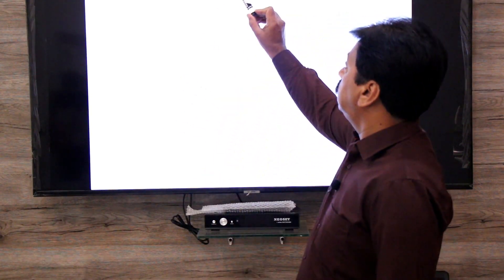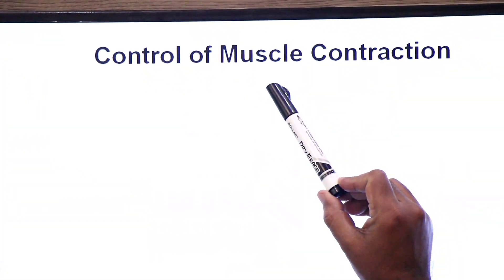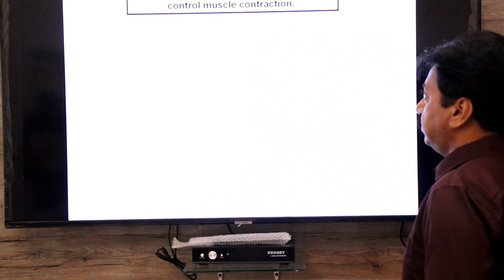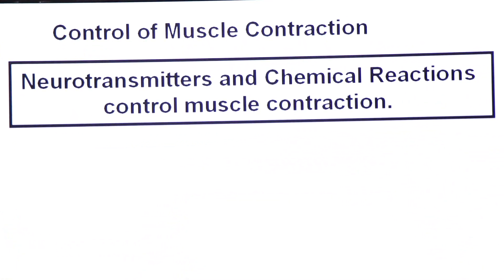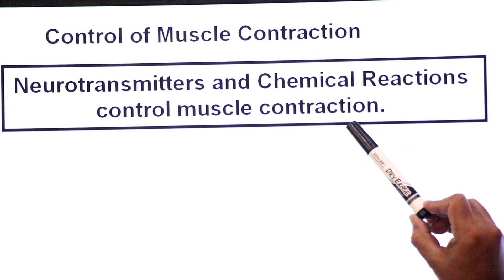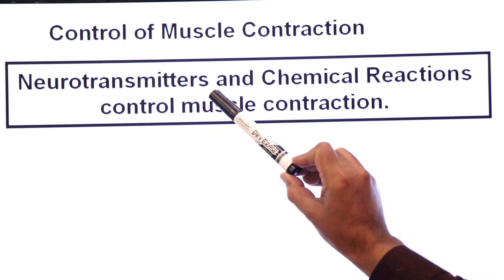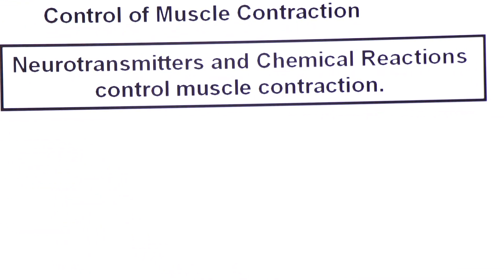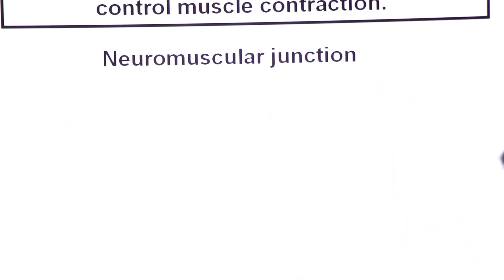Welcome back to inter biology class. Dear students, today we will talk about control of muscle contraction. We will address the topic of muscle contraction — neurotransmitters and chemical reactions control muscle contraction. If we have neurotransmitters, then we will talk about the Neuromuscular Junction.